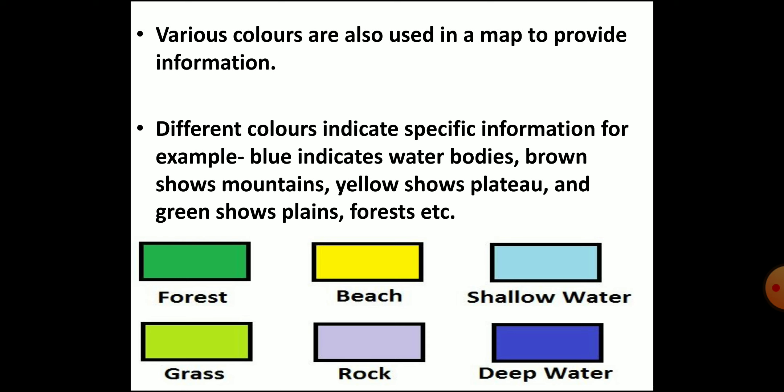Even colors are also used to make the map reading easier and understandable for all. Different colors are used to indicate specific information. For example, generally blue color indicates water bodies like seas, oceans, lakes, rivers, etc. Brown color indicates mountains and hills. Green color is used for plains, forests, or grasslands, and yellow color is used for plateau.